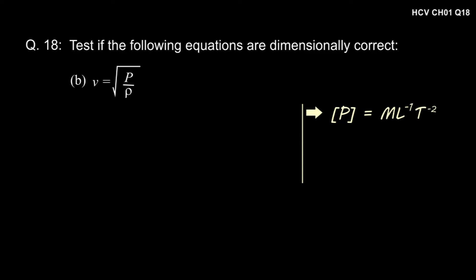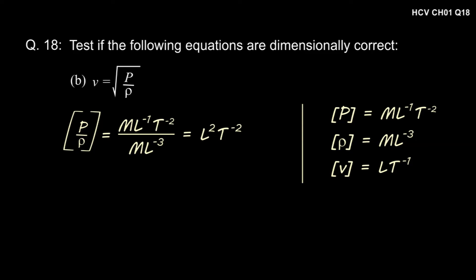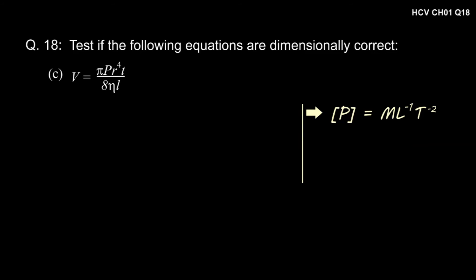In part B of the question, we have to check if V is equal to root under P by rho is dimensionally correct. The dimension of P is ML to the power minus 1 t to the power minus 2, and the dimension of rho is ML to the power minus 3, and the dimension of velocity V is Lt to the power minus 1. The dimension of P by rho equals ML to the power minus 1 t to the power minus 2 divided by ML to the power minus 3, which simplifies to L squared t to the power minus 2. Taking the square root gives Lt to the power minus 1, which is the dimension of velocity. Therefore, the expression is dimensionally correct.